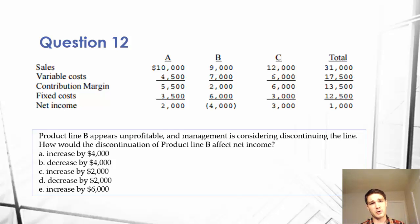We get a lot of information in this question regarding sales, variable costs, contribution margins, fixed costs, and net income for a series of products. And then we get the question: product line B appears unprofitable, and management is considering discontinuing the line. How would the discontinuation of product line B affect net income?